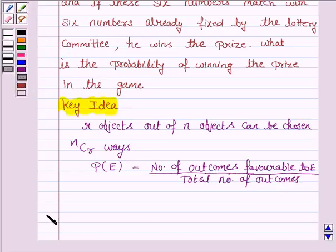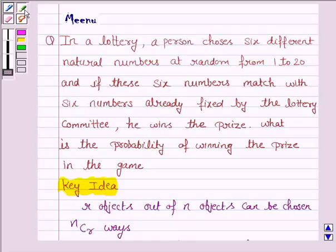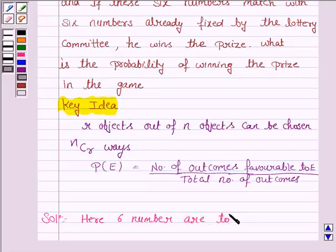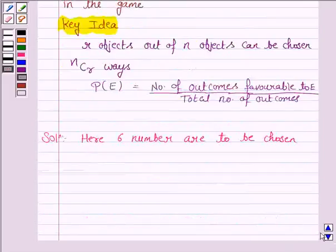Let us now proceed with the solution. We are given that the person chooses six numbers from the natural numbers 1 to 20. So here, six numbers are to be chosen from 1 to 20.